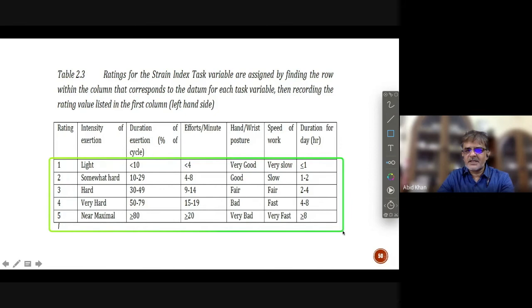So in this case, once you have ranked the ratings for each variable, each responsible variable for the strain index, we go for giving the weightage for each variable. And weightage for each variable is different. Weightage for intensity, weightage for duration, weightage for effort, weightage for wrist and posture, weightage for speed of work, and weightage for duration.